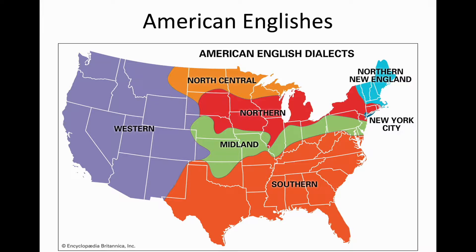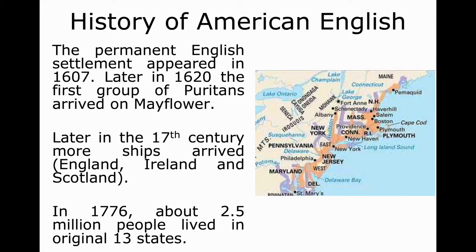Since it's difficult for scholars to agree what American English truly is, then it is hard to pinpoint its location. Of course, one can argue that American English must be spoken in America, and that will be partly right, because the history of American English went along with the process of colonization of the American continent. The permanent English settlement in North America appeared in 1607. Later, in 1620, the first group of Puritans arrived on the Mayflower. They didn't want to return to England as they searched for a new land where they could exercise the freedom of religion. Later, more ships arrived, bringing with them people from different parts of England, Ireland, and Scotland. And by the time independence was gained in 1776, about 2.5 million people lived in the original 13 states.